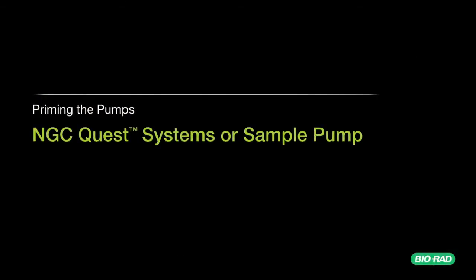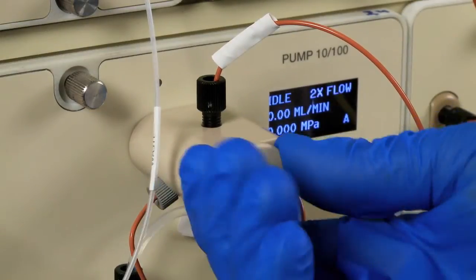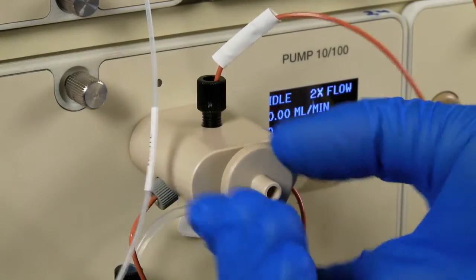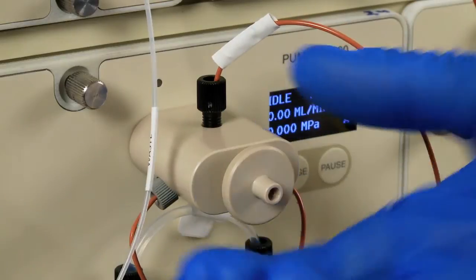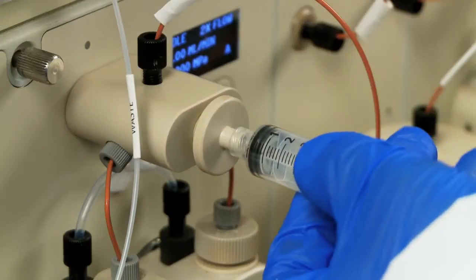NGC Quest systems or sample pump. Open the priming port by turning it counter-clockwise approximately one to two full turns. Then attach a syringe into the port.